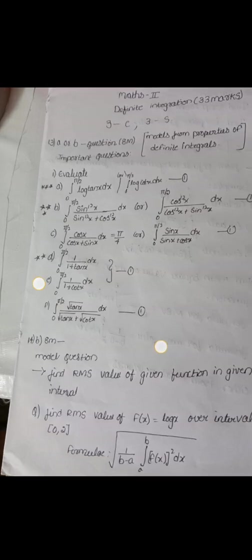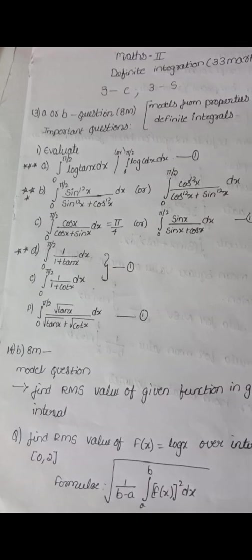If you are prepared in one chapter, you will be able to pass with 20 to 25 marks. So we have to choose 2 chapters. In the first, we will complete the first chapter. Then there is the 11th question, A or B. That is the question paper pattern.